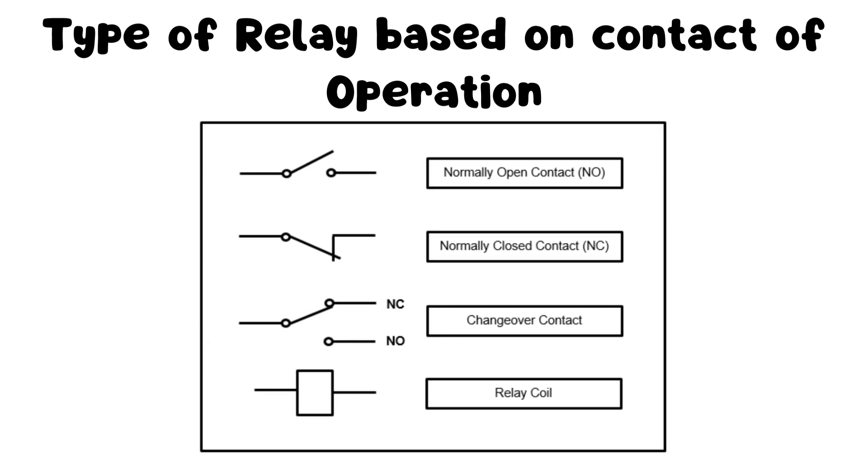Relays can be categorized into two types based on their contact operation: normally open (NO) and normally closed (NC). In a normally open relay, the contacts are open when the relay is not energized, and they close when the coil is energized. In an NC relay, the contacts are closed in the resting state and open when the coil is energized.